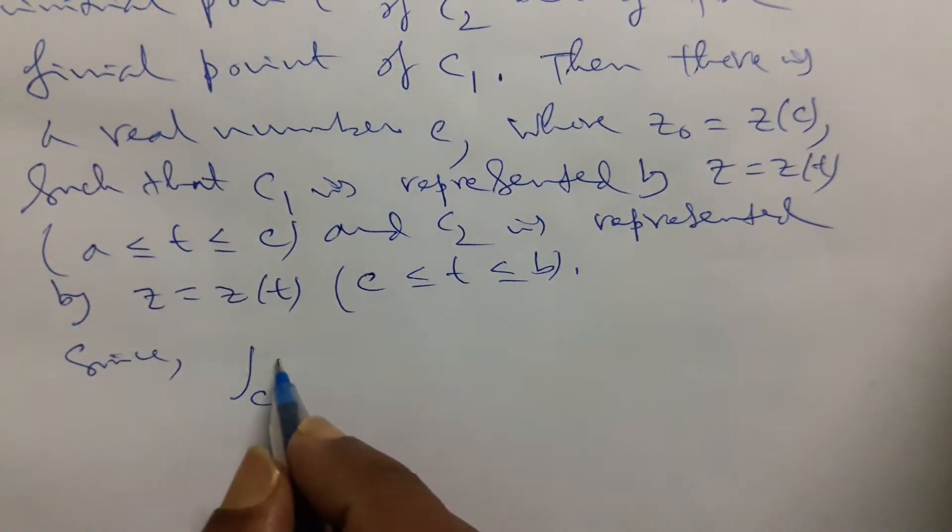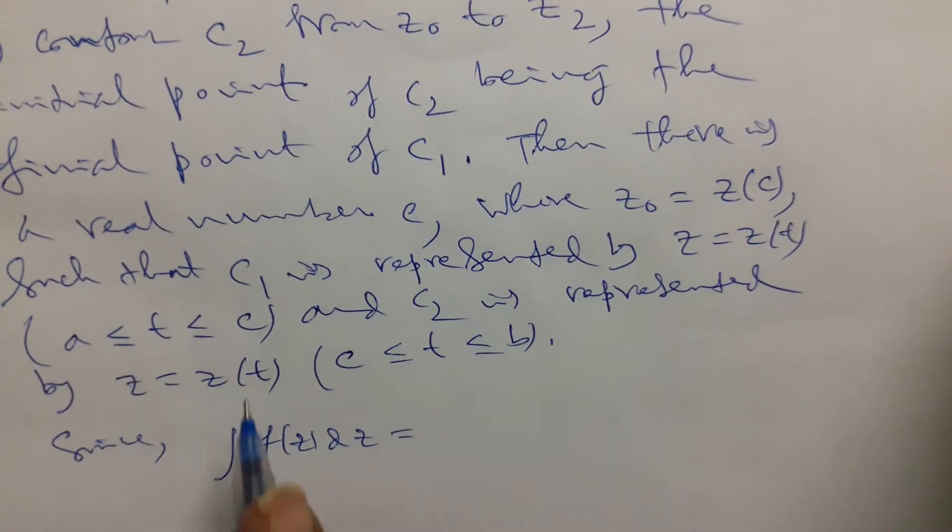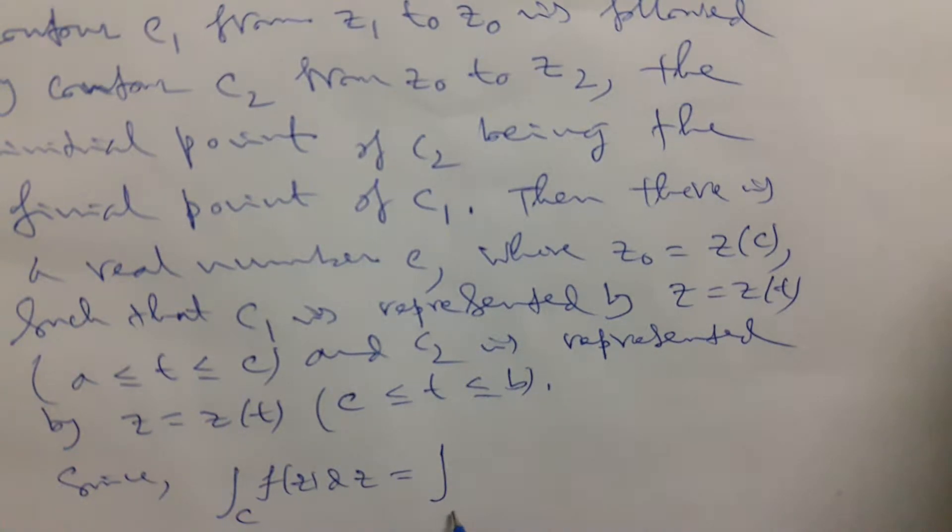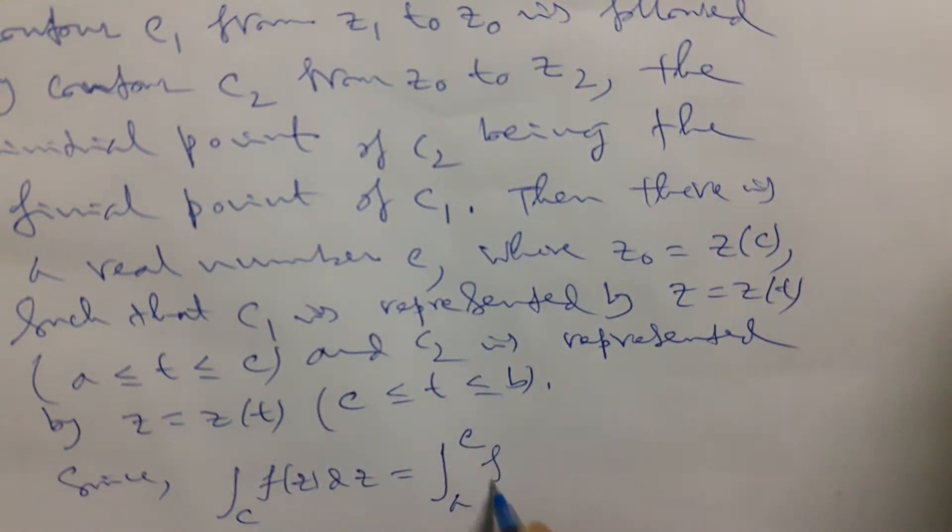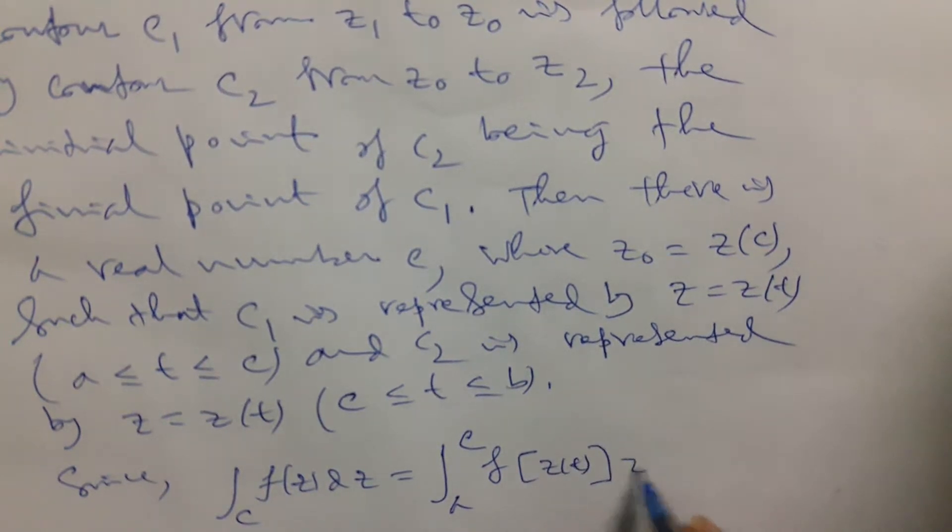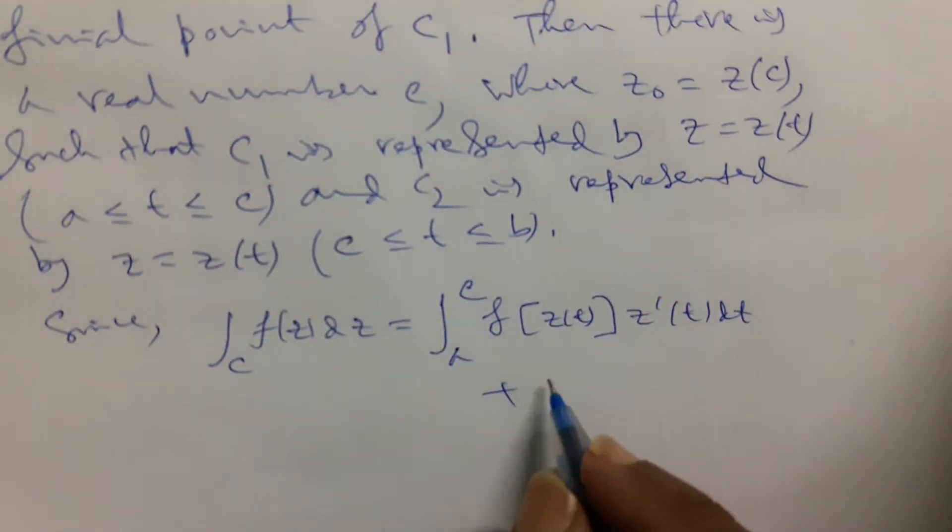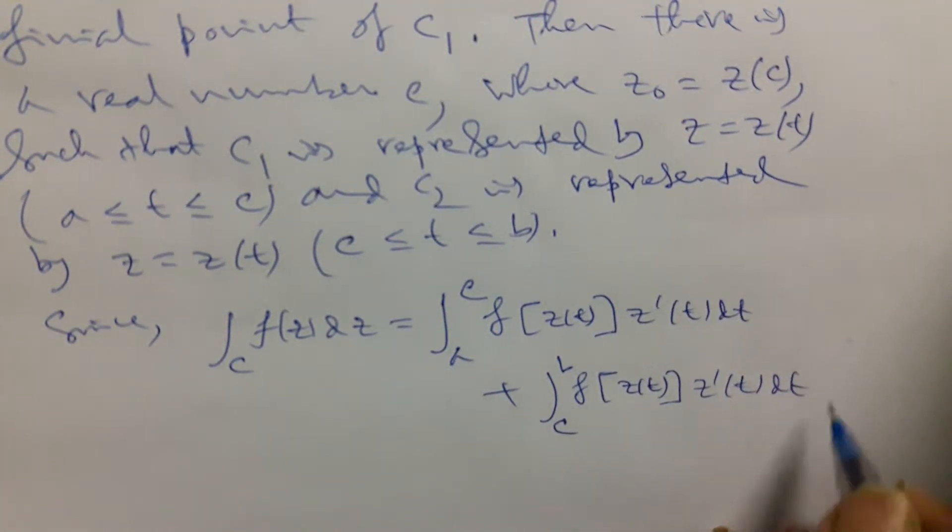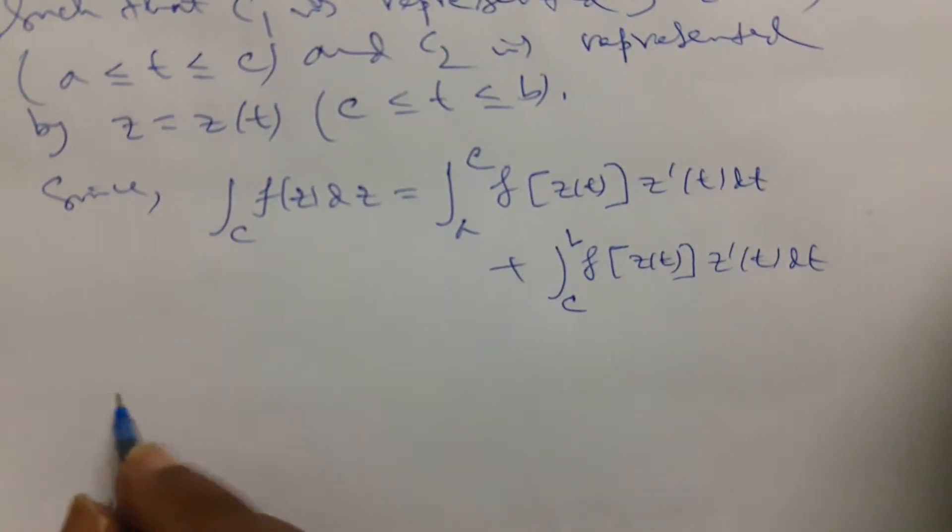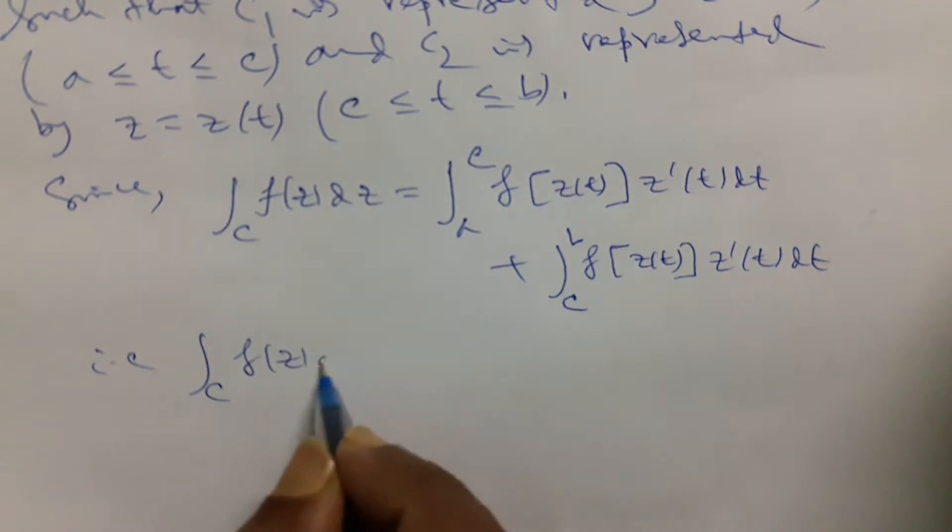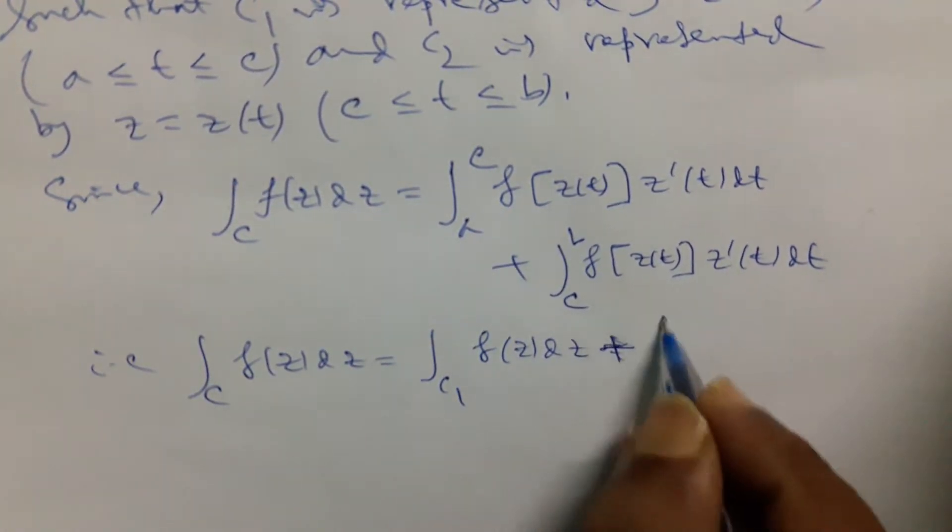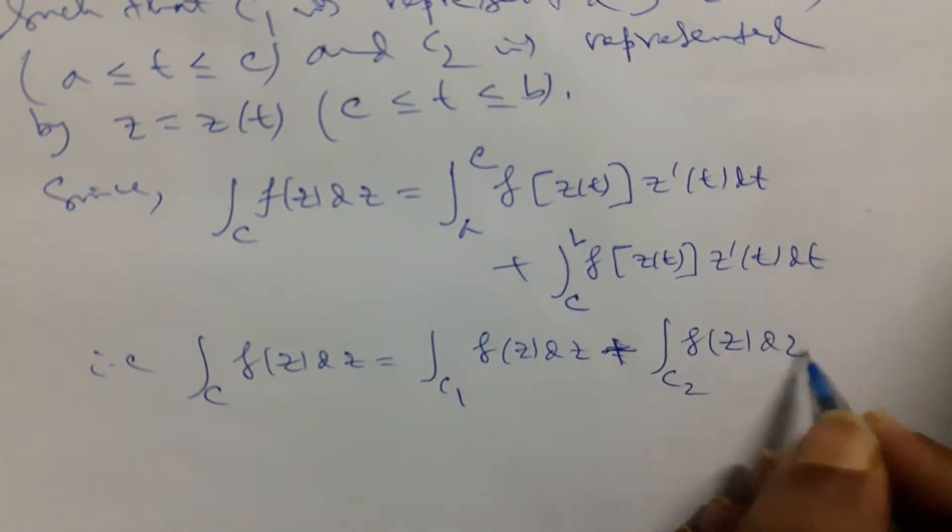Since contour over C of f(z)dz will consist of two contours C1 and C2, this will be the integral from a to c of f(z(t))z'(t)dt plus the integral from c to b of f(z(t))z'(t)dt. That is, the integral over C of f(z)dz equals the integral over C1 of f(z)dz plus the integral over C2 of f(z)dz. Taking this as equation number one.